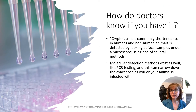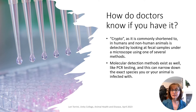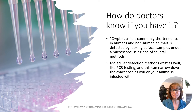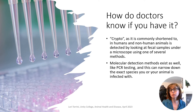How do doctors know if you have it? Crypto — meaning either cryptosporidium or cryptosporidiosis — in humans and non-human animals is detected by looking at fecal samples under a microscope using one of several methods. We want to be careful when we are around animal feces and our own feces — make sure you're washing your hands and not handling feces without latex or nitrile gloves, especially those of us in the medical or veterinary fields. There are also molecular detection methods like PCR testing — polymerase chain reaction testing — which can narrow down the exact species of crypto that you or your animal is infected with.